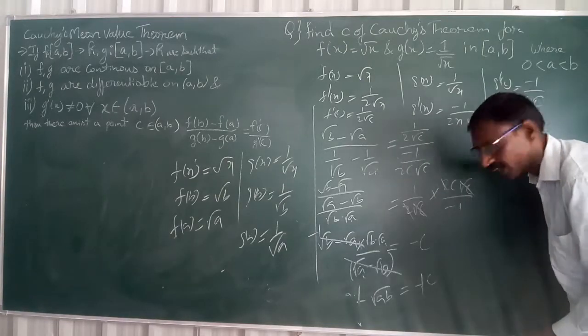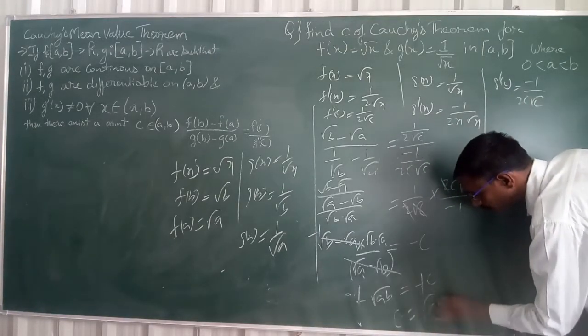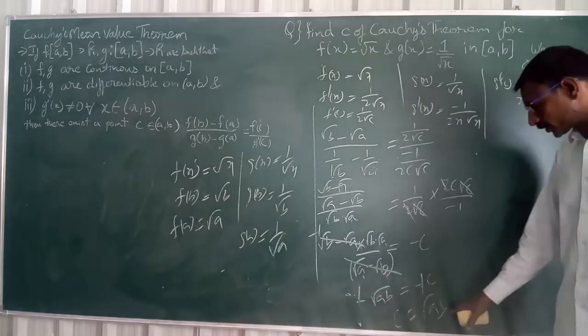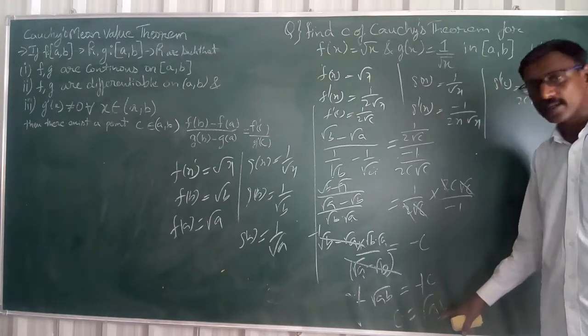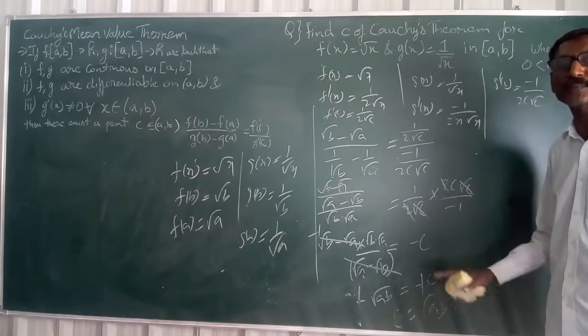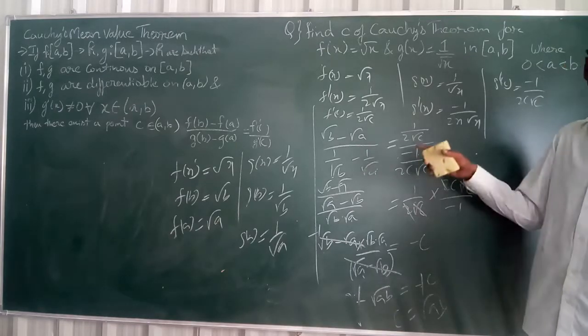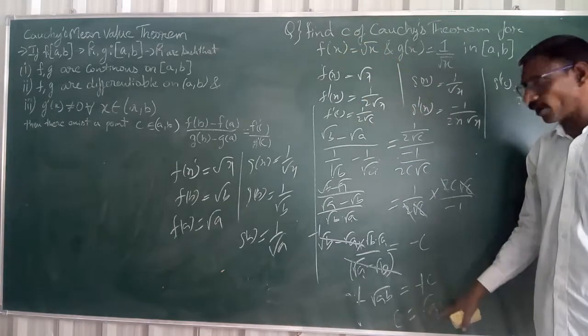So C must lie between A and B, because √(AB) lies between A and B. Therefore C is equal to √(AB), which lies in the interval (A, B).